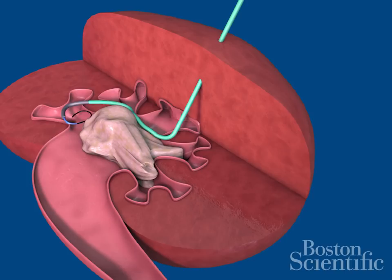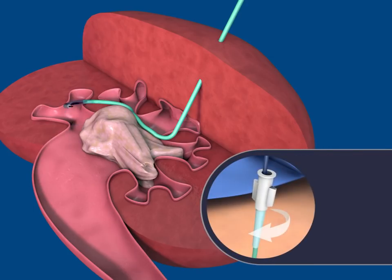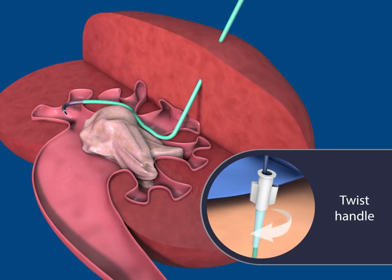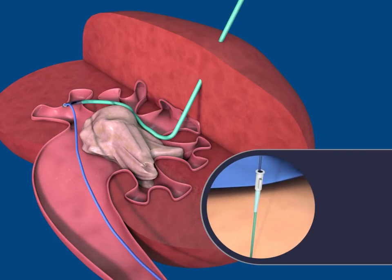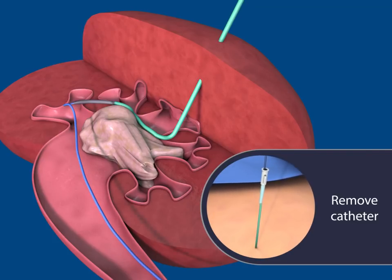Back the guide wire up to the stone, leaving a portion of the wire's tip outside the catheter. Twist the catheter handle to advance the wire past the stone towards the ureteropelvic junction, down the ureter and into the bladder. Remove the catheter.